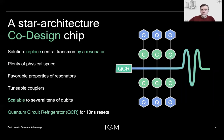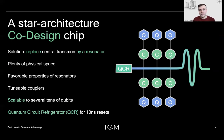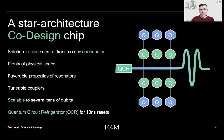We believe this architecture is scalable to several tens of qubits, simply by extending the resonator and going into higher modes to get more coupling locations along the resonator. For co-design purposes, we have also added a quantum circuit refrigerator, or QCR, to the central resonator. This is because the algorithm to simulate nanoscale NMR problems requires resets as part of our quantum gate set, which is crucial for accurately simulating the problem. In the spirit of building application-specific hardware, we add a QCR to reset the resonator state.